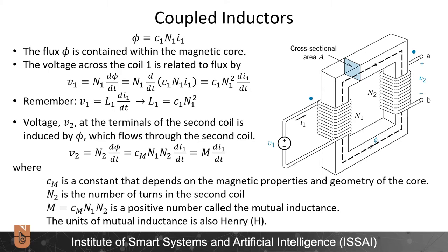The flux phi is contained within the magnetic core, and the voltage across the first coil V1 is given by V1 equals N1 times d-phi over dt. Since we have the expression for phi, we take the derivative and end up with V1 equals C1 times N1 squared times dI1 over dt. Comparing this with the inductor constitutive relationship V1 equals L1 times dI1 over dt, the self-inductance is L1 equals C1 times N1 squared. So the self-inductance depends on geometry, material properties, and the square of the number of windings.